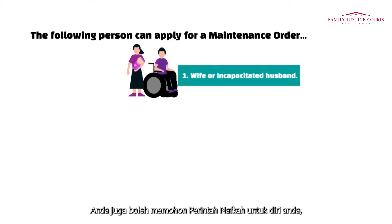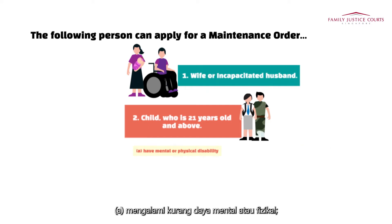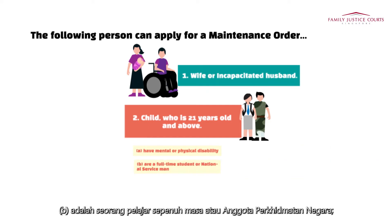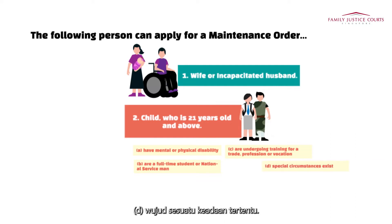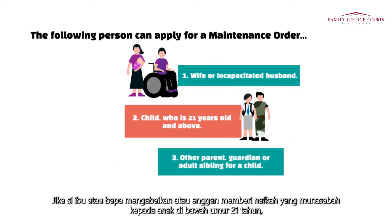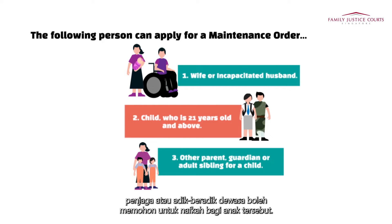You can also apply for a maintenance order for yourself from your parents if you are 21 years old and above, and: A) have a mental or physical disability, B) are a full-time student or national serviceman, C) are undergoing training for a trade, profession, or vocation, or D) special circumstances exist. If a parent neglects or refuses to provide a child under 21 with reasonable maintenance, you as the other parent, guardian, or adult sibling can apply for maintenance for the child.